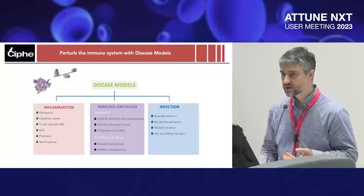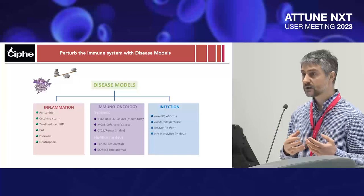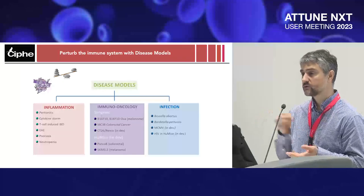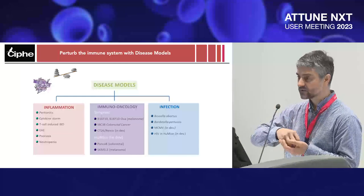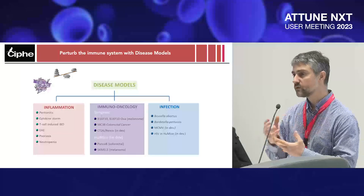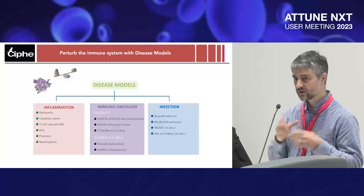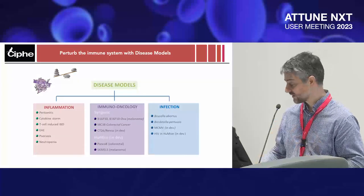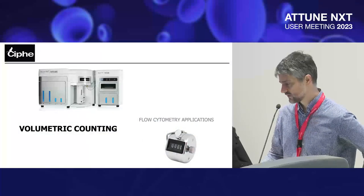Patient-derived xenograft is a real challenge because each tumor is something different. In these models, you implant a patient tumor into an immunodeficient animal. The patient tumor itself costs around 1,200 euros per sample, and when you use humanized mice it's another 1,200 euros — so 2,400 euros per sample. If you don't know what you're doing, it's a big failure, which is why we have interest in the new instrument.